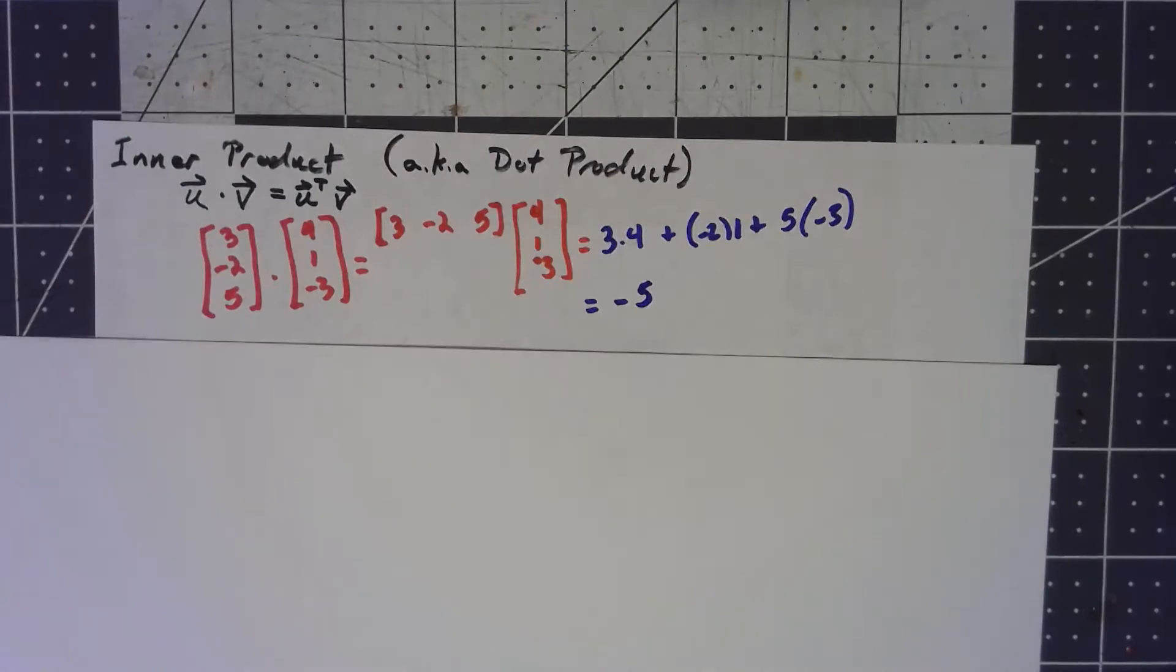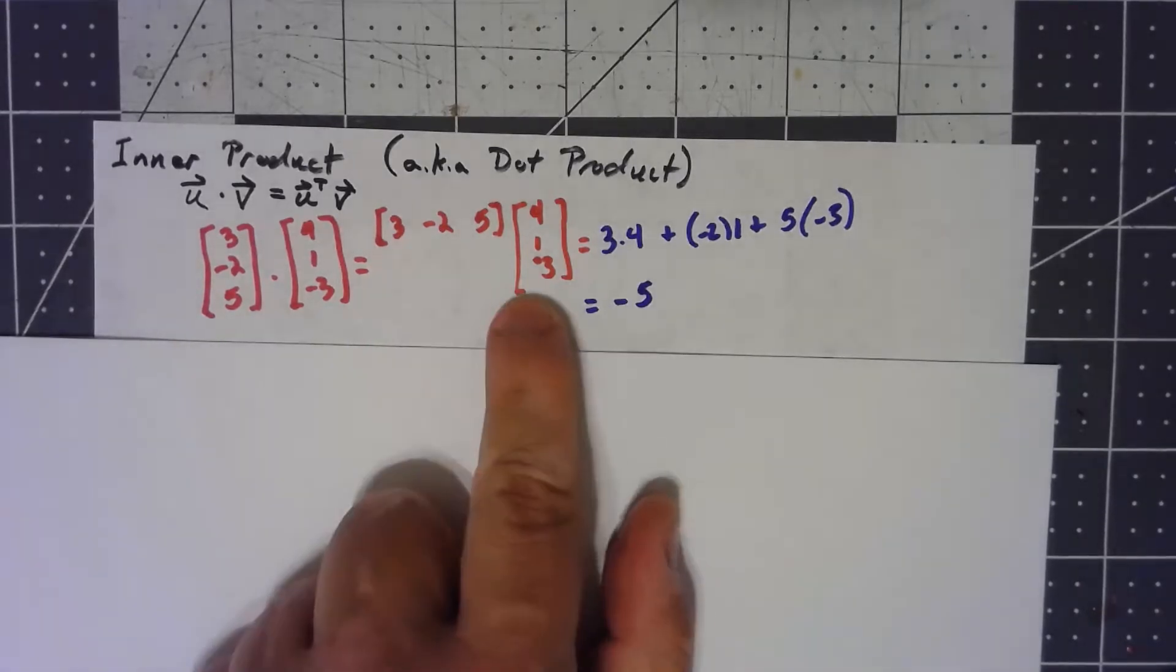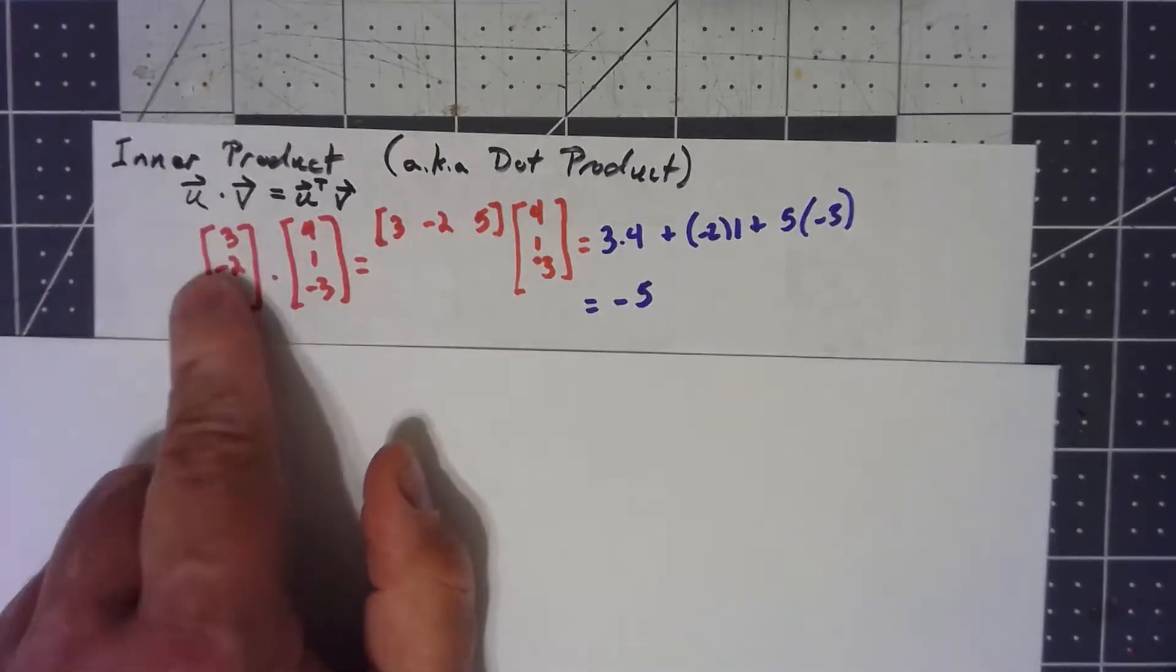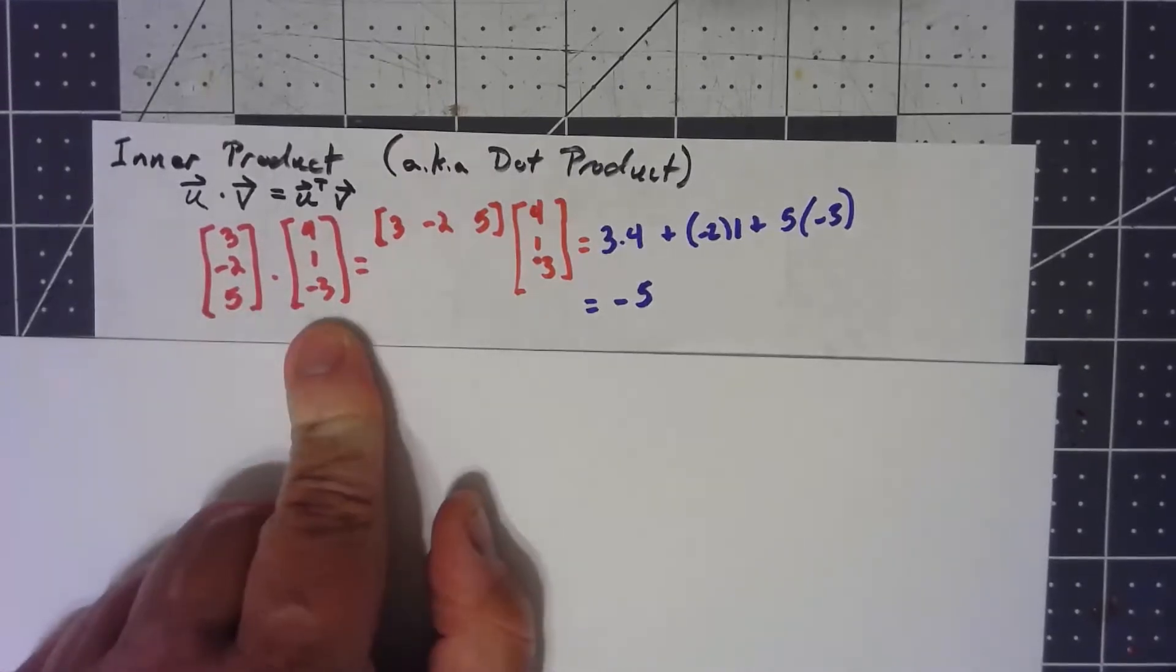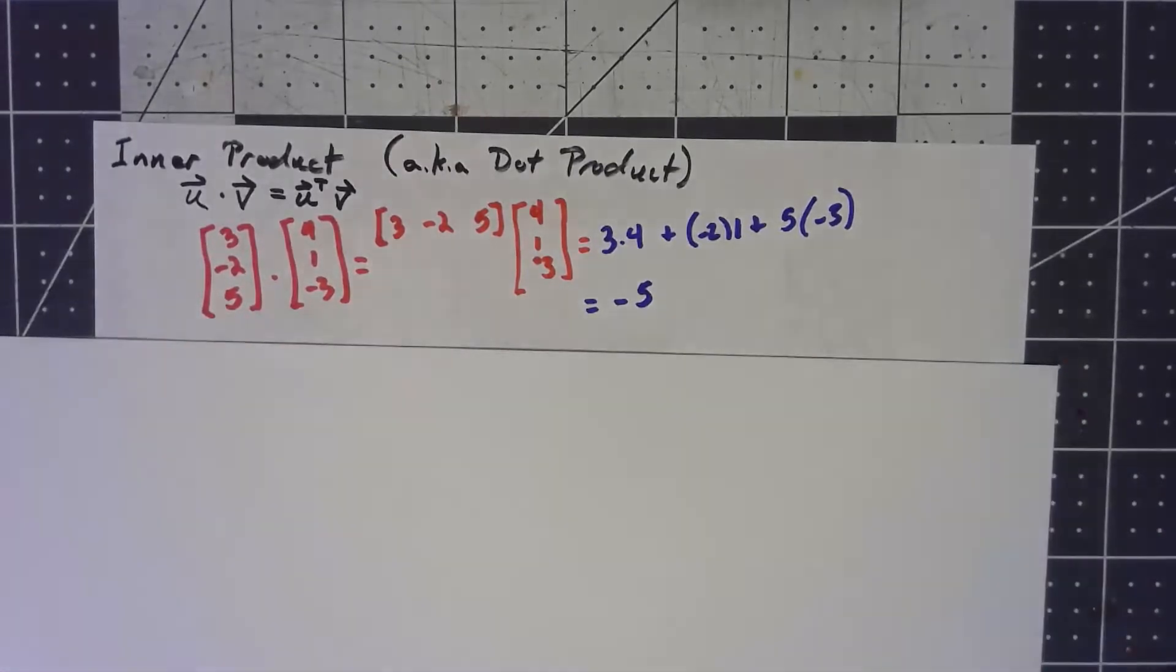In fact, because of the way this works, we actually often don't even bother thinking about it in terms of the matrix. We just say, I'm going to multiply the first components, multiply the second components, multiply the third components, and add them together.